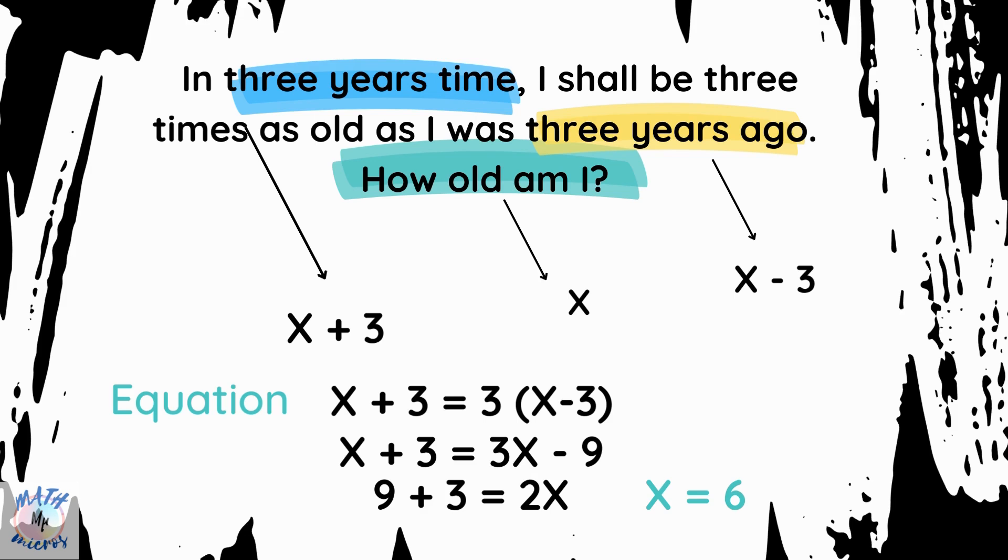And three years ago, it will be x minus 3, which is 6 minus 3, 3. And that age multiplied by 3, that is 3 times 3, it will be 9. So, which equals the age that will be 3 years later, which is 9.